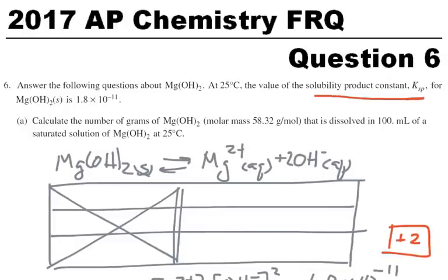Answer the following questions about magnesium hydroxide. At 25 degrees Celsius, the value of the solubility product constant, KSP, for magnesium hydroxide solid is 1.8 times 10 to the negative 11. So that's a very small number, which means that this is not a very soluble compound.